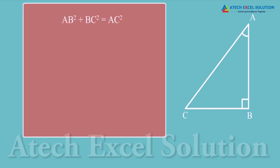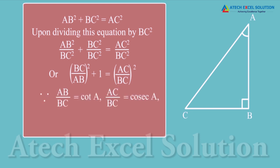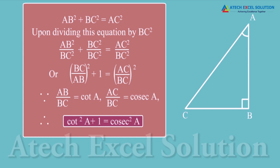Now let us divide this equation by BC². We get (AB/BC)² + 1 = (AC/BC)². Since AB/BC = cot A and AC/BC = cosec A, upon substituting these values we get cot²A + 1 = cosec²A. This is also a trigonometric identity.